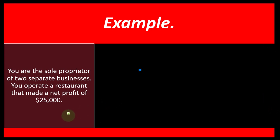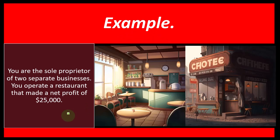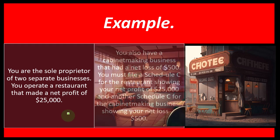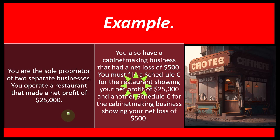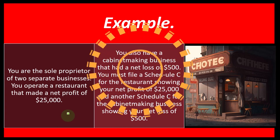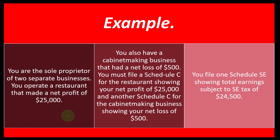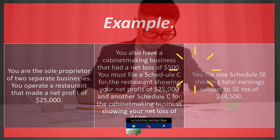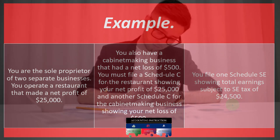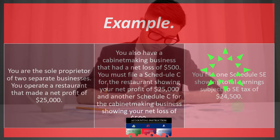Example: you are the sole proprietor of two separate businesses — a restaurant with a net profit of $25,000 and a cabinet-making business with a net loss of $500. You must file a Schedule C for the restaurant showing a net profit of $25,000 and another Schedule C for the cabinet-making business showing the net loss of $500. You file one Schedule SE because both businesses share the same Social Security number, showing total earnings subject to SE tax of $24,500 ($25,000 minus the $500 loss).